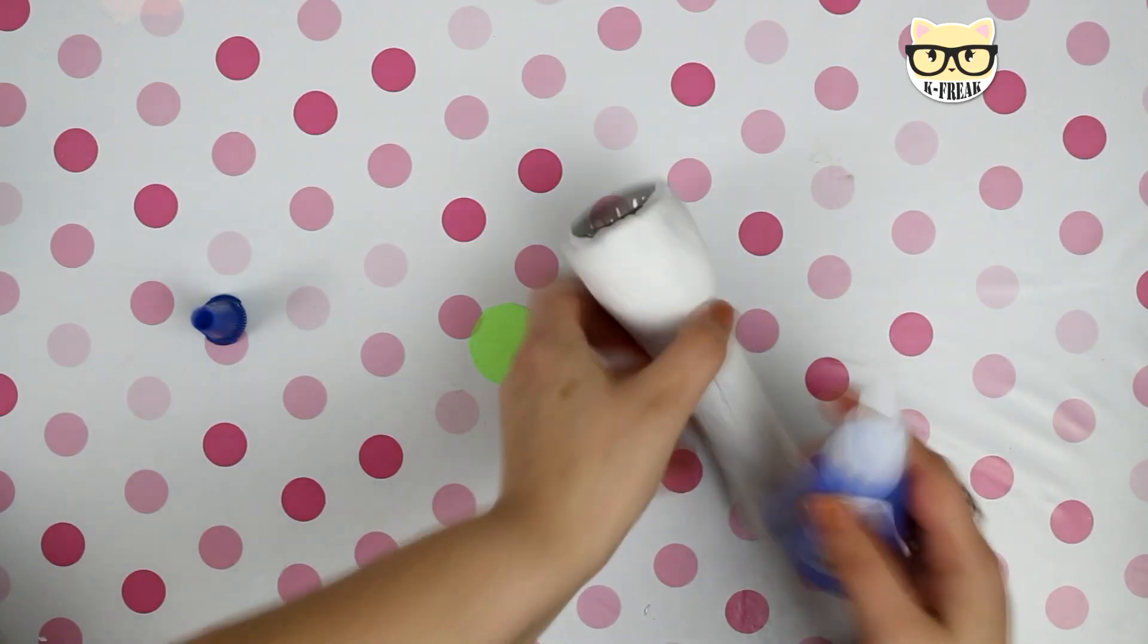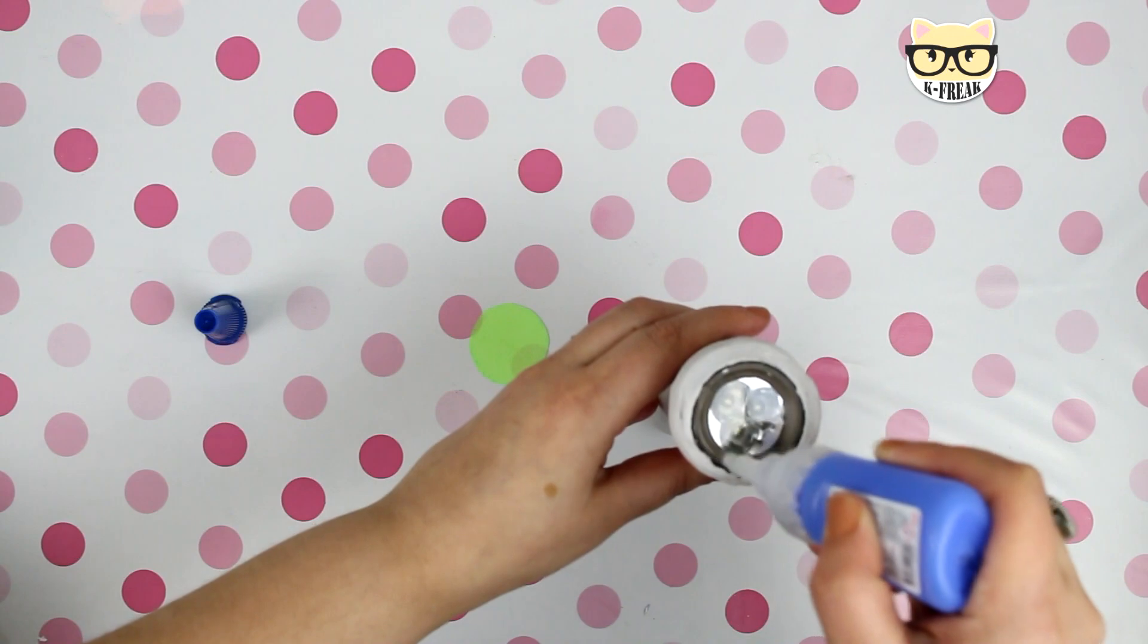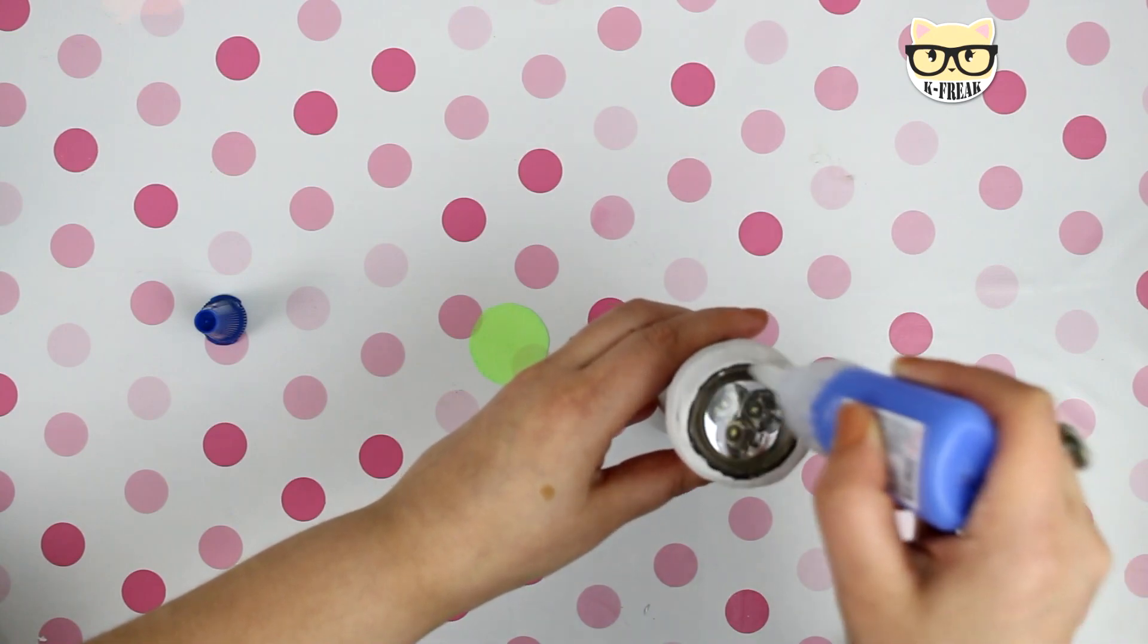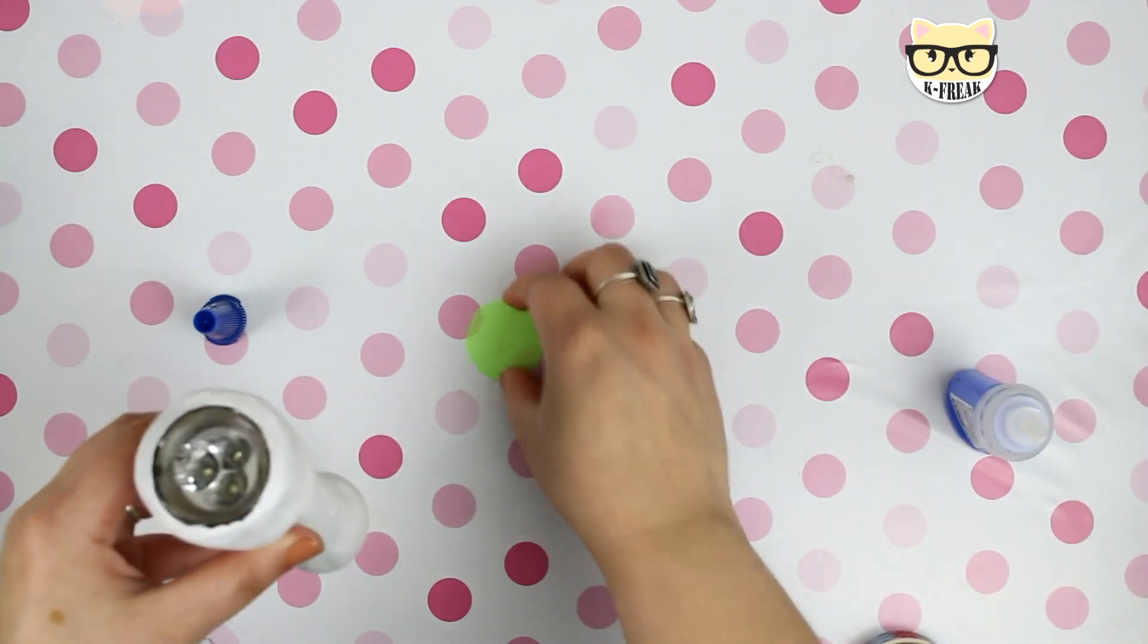I also decided to glue a small circle of the green acetate to the flashlight just to make sure that the light will be enough green. I used super glue for it.